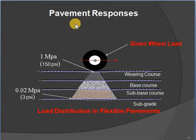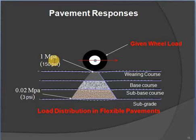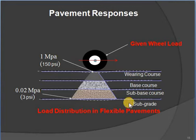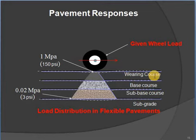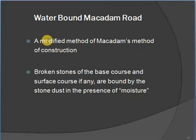Looking at pavement responses: a given wheel load of 1 MPa (150 psi) is distributed through four layers — bearing course, base course, sub-base course, and subgrade — demonstrating load distribution in flexible pavements.